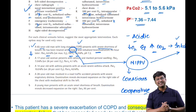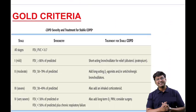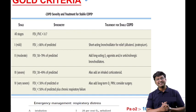To assess severity of COPD, we use the GOLD criteria — Global Initiative for Obstructive Lung Diseases — using the parameter FEV1/FVC. Normal FEV1/FVC is 70%; if less than 70%, it indicates obstructive lung disease. Stage 1: FEV1 ≥80%. Stage 2: FEV1 50–79%. Stage 3 (severe): FEV1 30–49%. Stage 4 (very severe): FEV1 <30%.